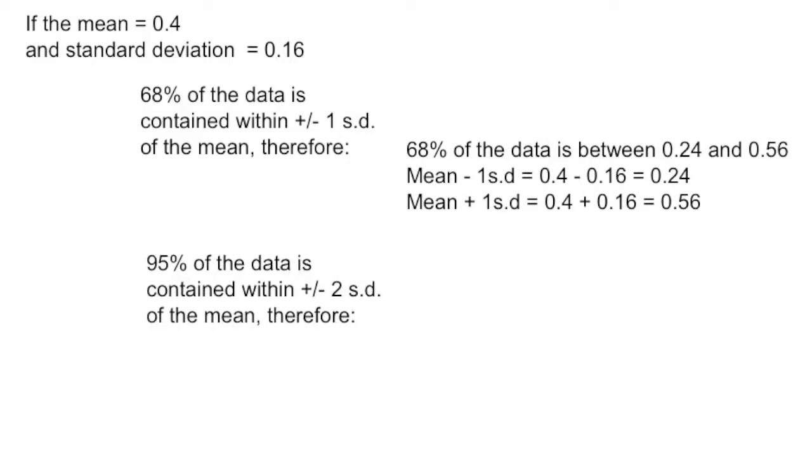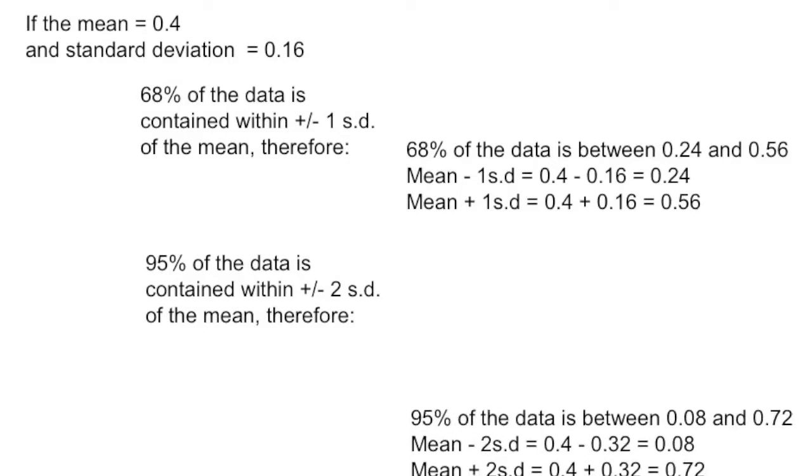You could be asked something similar, except you could be asked for the range of data that contains 95% of all the data. In such a case, you're going to do exactly the same thing, except you're going to add and subtract two standard deviations from the mean.